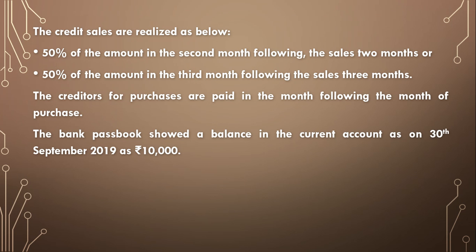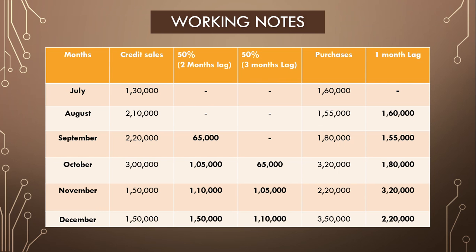For credit purchases, creditors are paid in the month following the month of purchase — one month credit. Working note: July purchases 1,60,000 paid in August; August purchases 1,55,000 paid in September; September purchases 1,80,000 paid in October; October purchases paid in November; November purchases paid in December. The figures relevant to our budget are: October = 1,80,000; November = 3,20,000; December = 2,20,000.